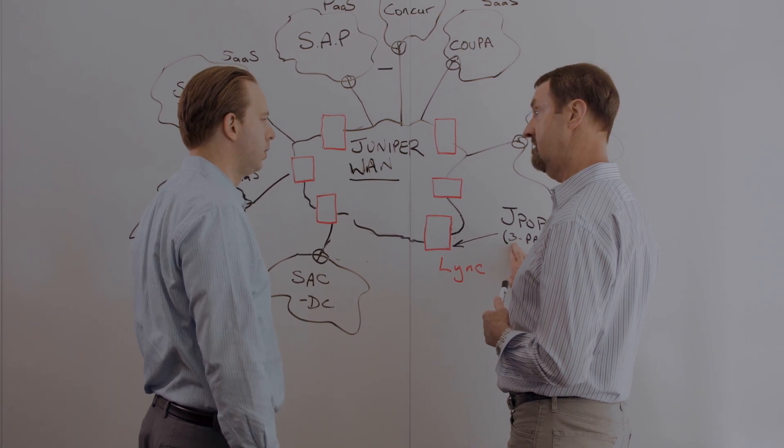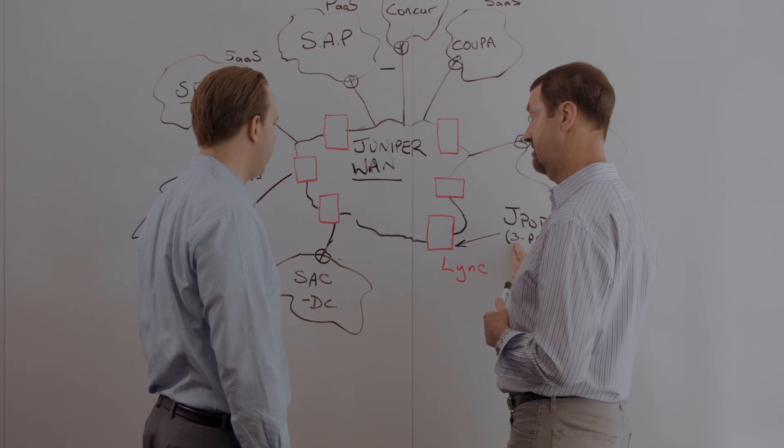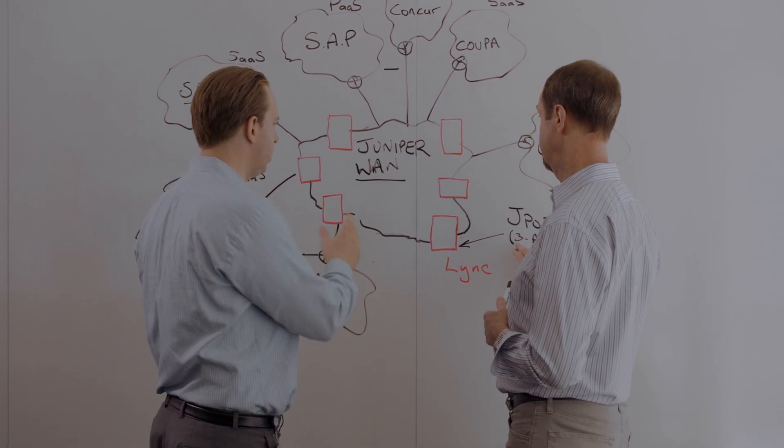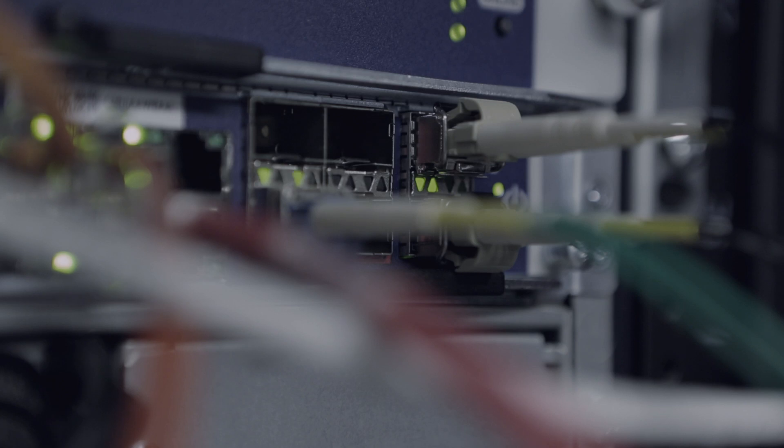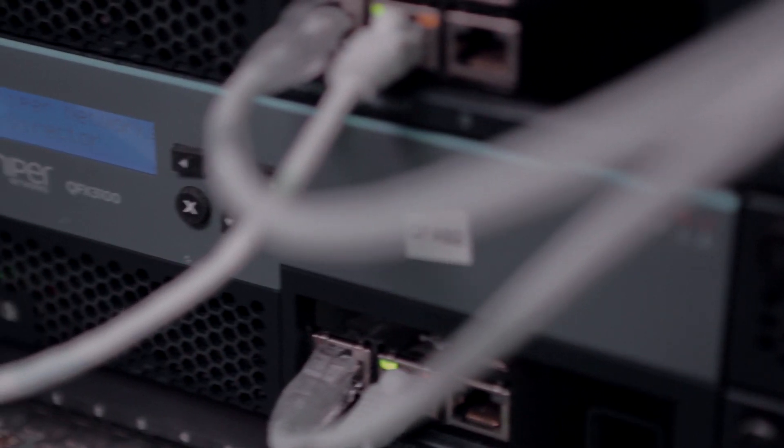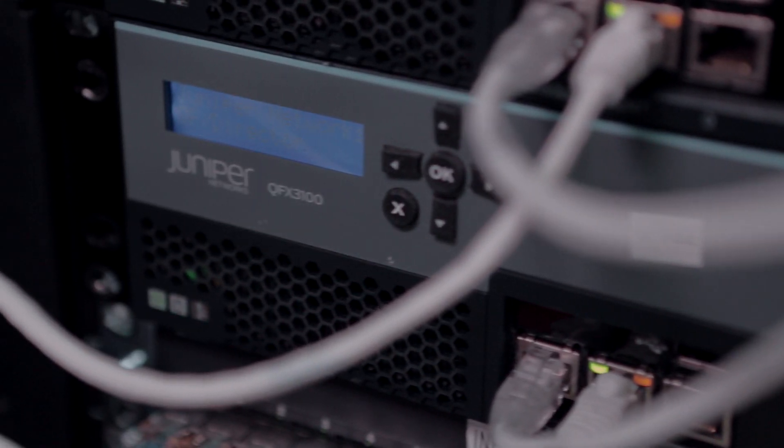Our JPOPs are standardized across the globe — they all look virtually identical. Those JPOPs are the aggregation points for many core services, not just the network, but also the security, and importantly in our design to enable cloud-to-cloud management, naming services, DNS obviously, and things like Active Directory.